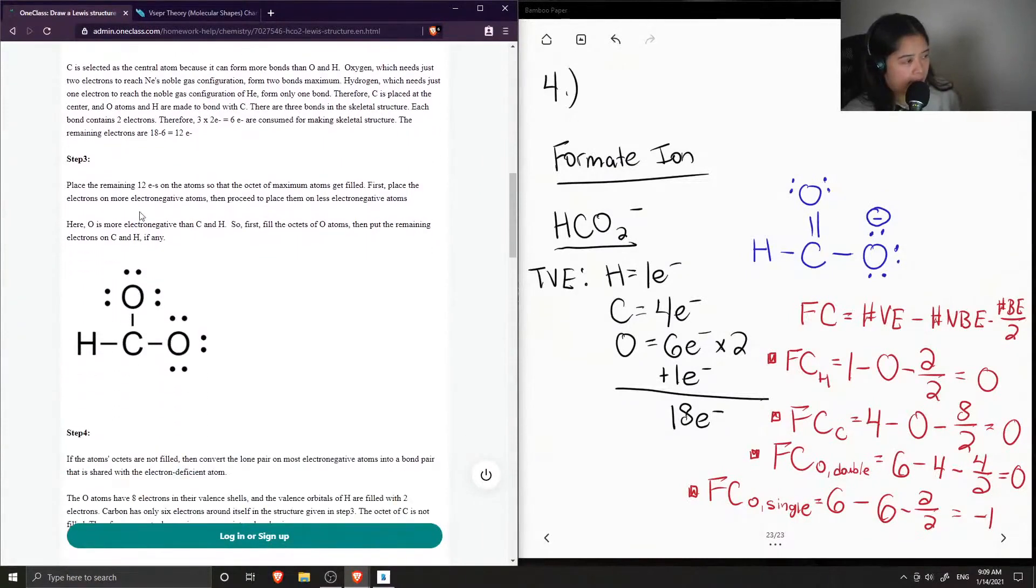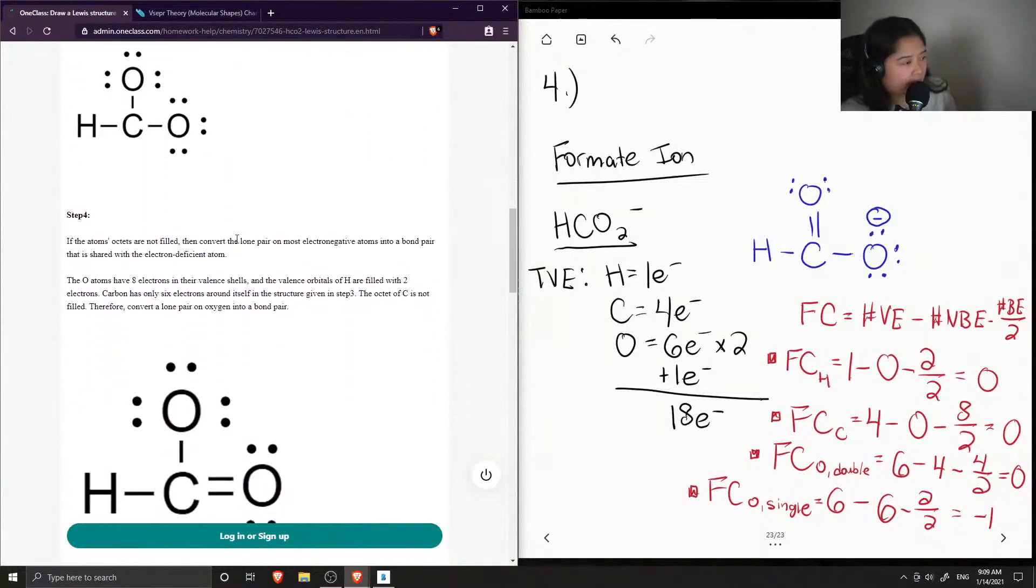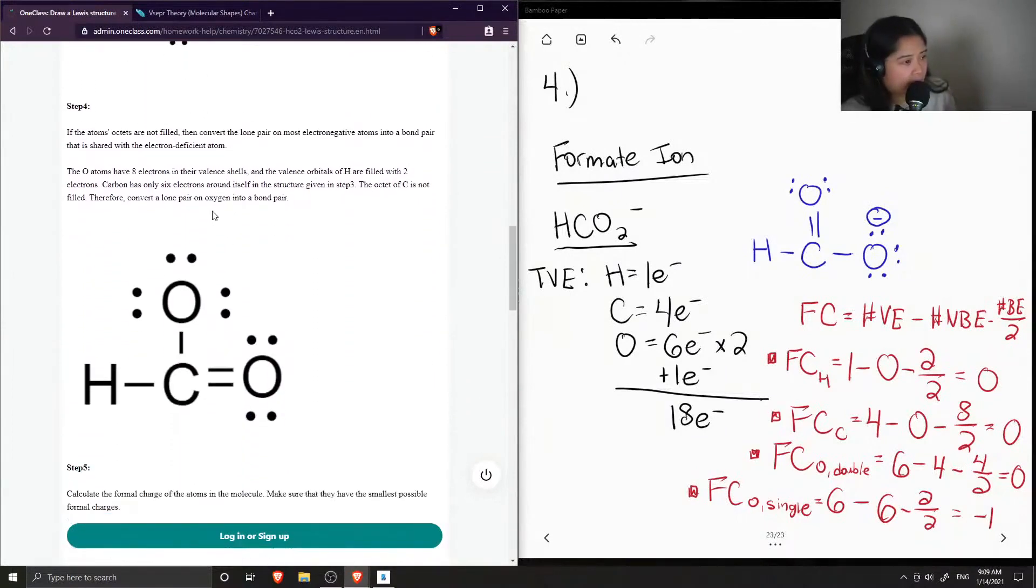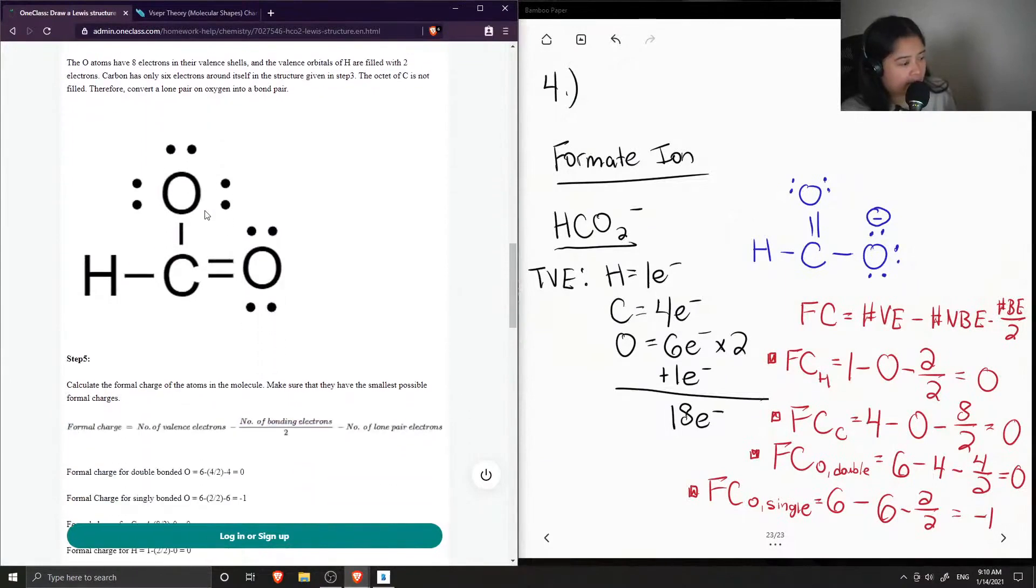Okay, so then they place the remaining 12 electrons on the atoms so that the octet of the atoms gets filled. And then now they added a lone pair on the carbon since it didn't have a full octet.